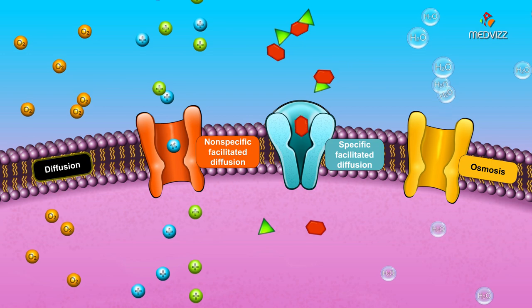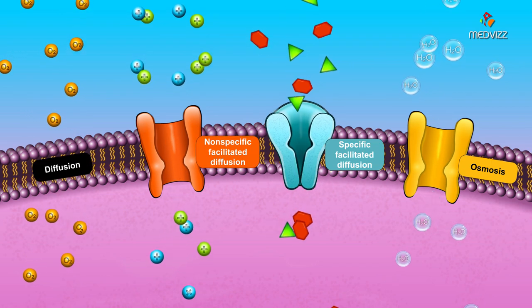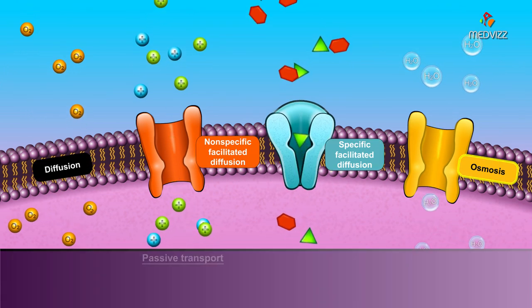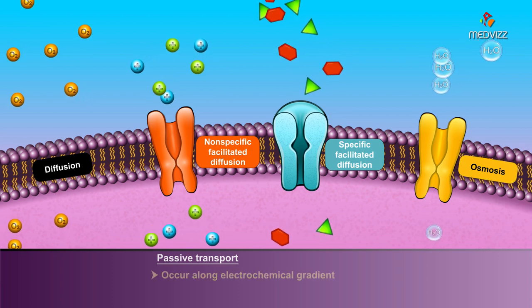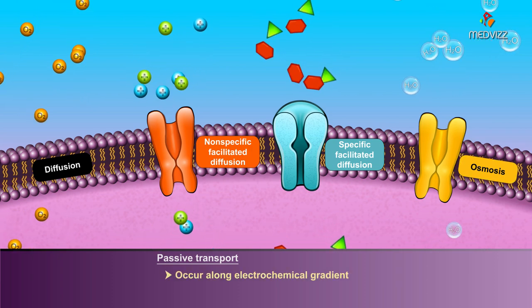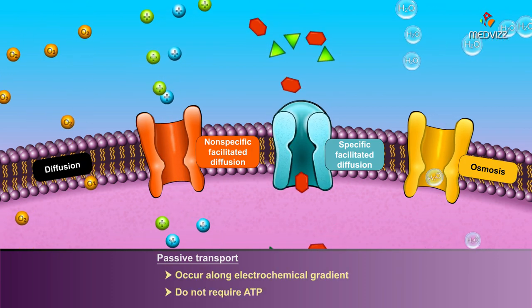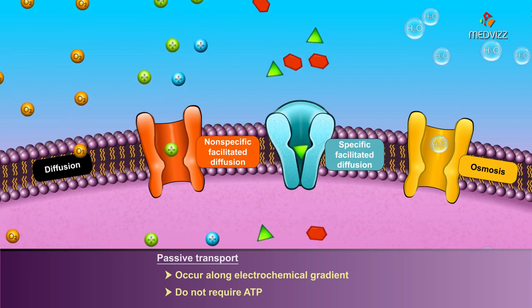Passive transport includes diffusion, nonspecific and specific facilitated diffusion, and osmosis. All of these processes occur along electrochemical gradients and do not require the expenditure of energy in the form of ATP.